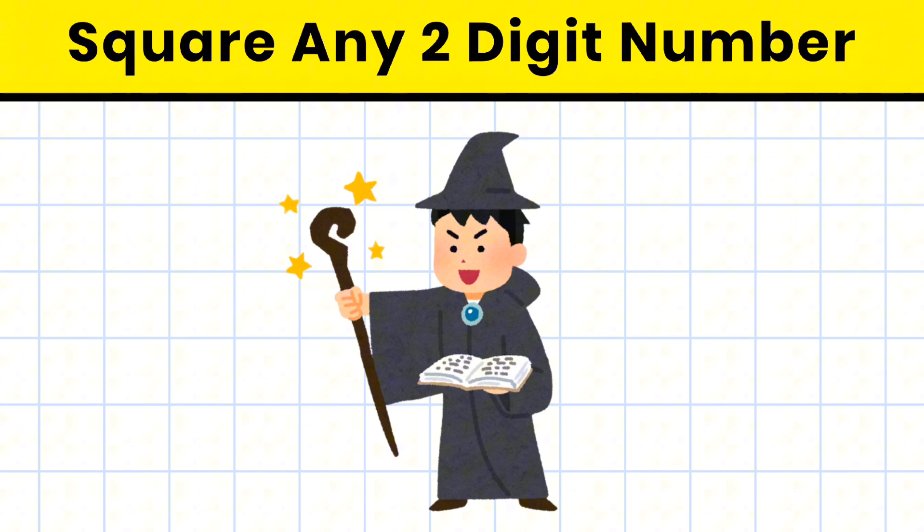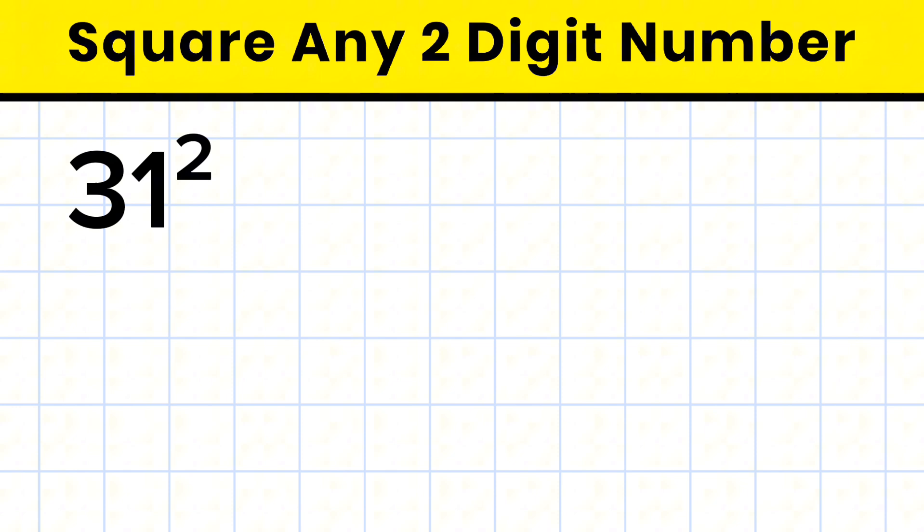Just like magic. Let's start with an easy example. 31 square. We'll divide the process into 3 simple parts. First, square the first digit. 3 square gives us 9.